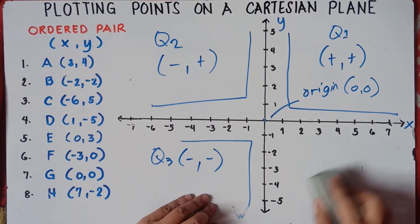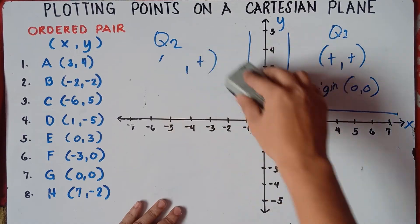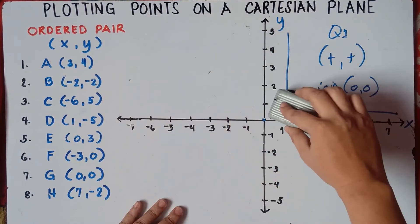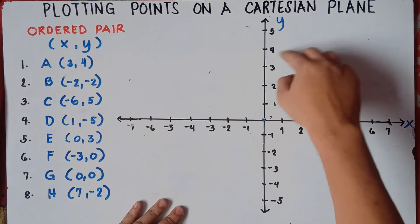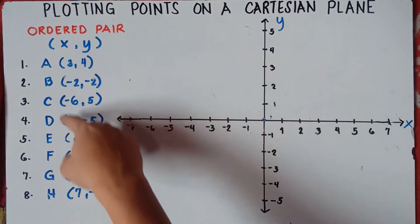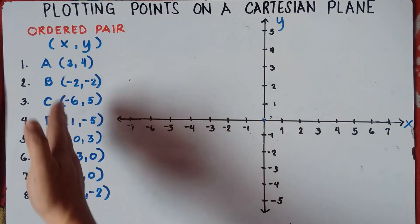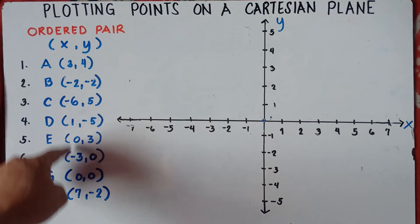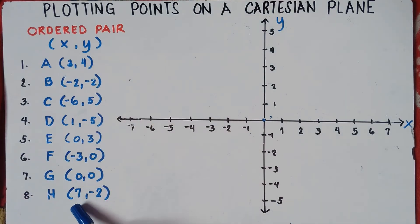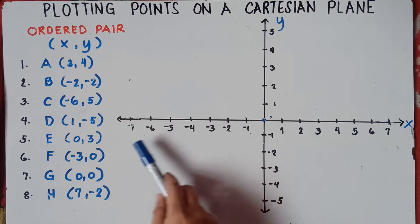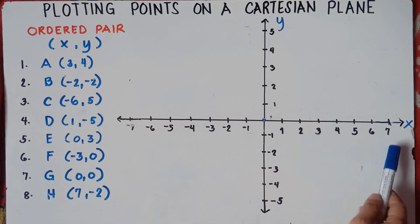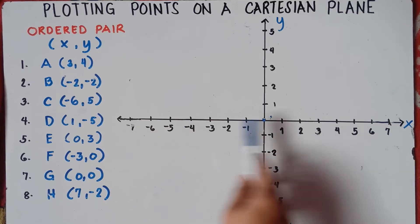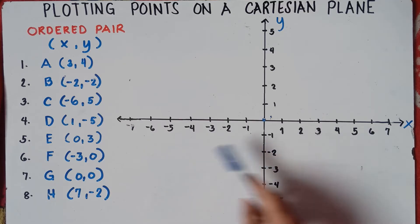When making the Cartesian plane, you need to check the given numbers so you have enough space on the graphing paper. Check the x-axis — x comes first — for the largest value of x. I checked the numbers and the highest number is seven, so I put seven. For the x-axis, the largest number is seven, so I label it negative seven and positive seven, so it is symmetrical.